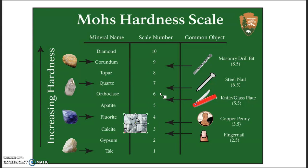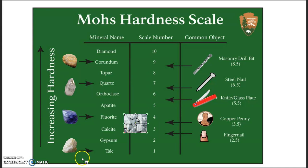The ultimate example: glass is 5.5 on Mohs hardness scale, harder than limestone. By this logic you could make a glass chisel and cut into the hardest limestone. This is bunk — it's nonsense in extremis.